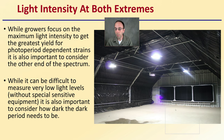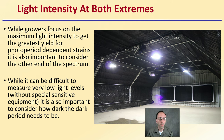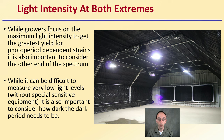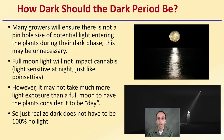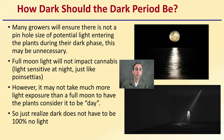So light intensity at both extremes. While growers focus on the maximum light intensity to get the greatest yield for photoperiod-dependent strains, it's also important to consider the other end of the spectrum. While it can be difficult to measure low light levels without special sensitive equipment, it is also important to consider how dark the dark period needs to be. Most growers ensure there's not even a pinhole-sized amount of light entering plants during the dark phase — this may be unnecessary.